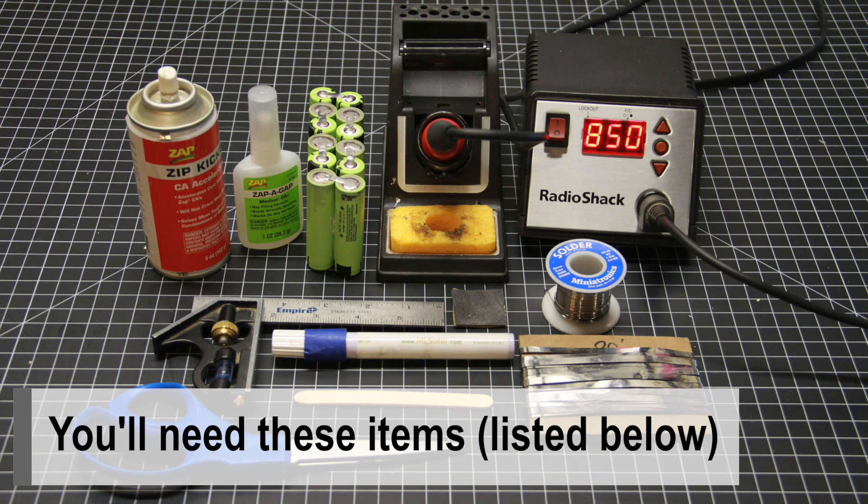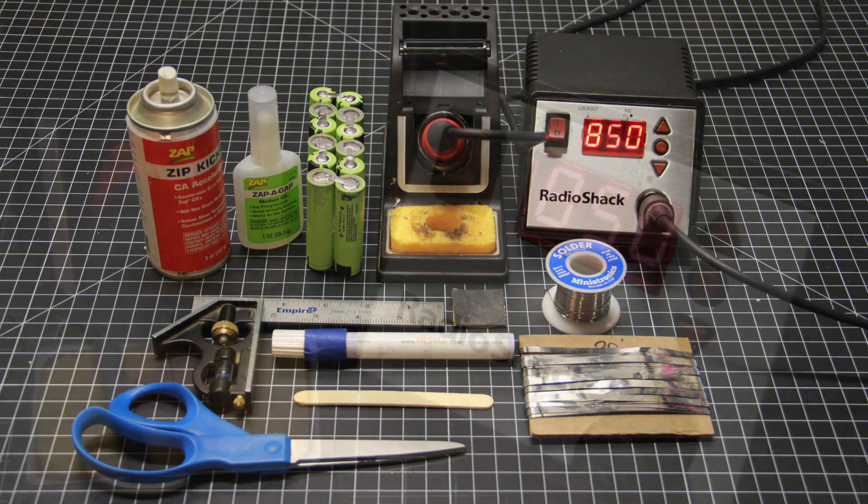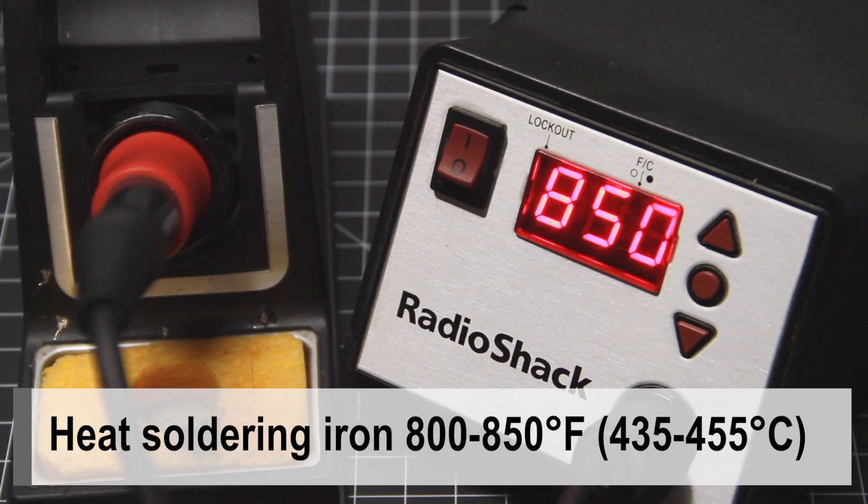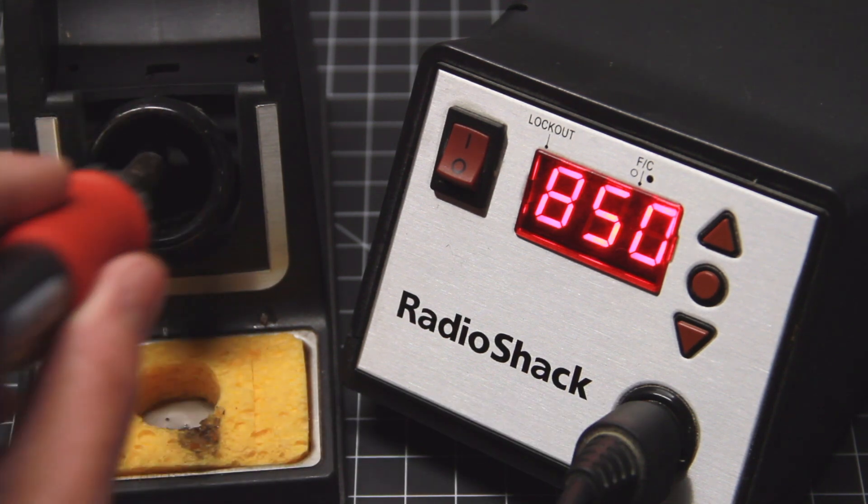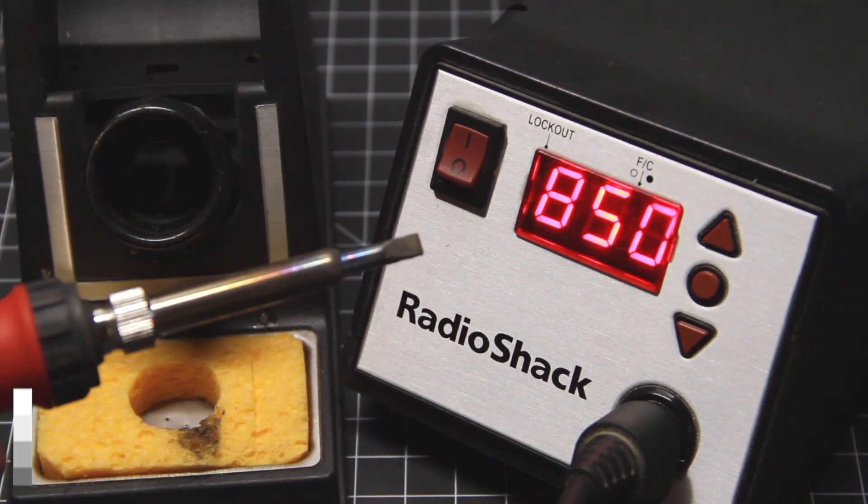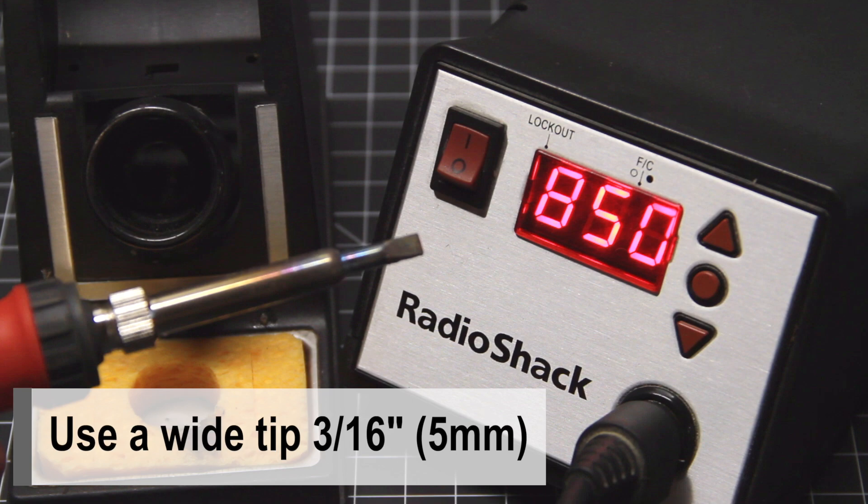You'll need these items, they're listed below. Heat your soldering iron to 800 to 850 degrees. Make sure to use a wide tip, 316 to 5mm.